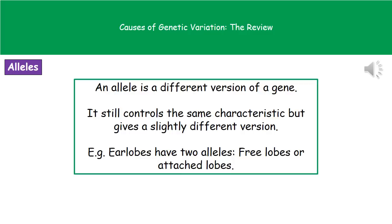Whenever we're talking about an allele, we're referring to a different version of a gene. It still controls the same characteristic, but gives a slightly different version. For example, there are two alleles for earlobes: one allele determines that you have free earlobes, and the second allele determines that you have attached earlobes. For other characteristics, there can be a greater number of alleles available.